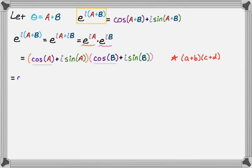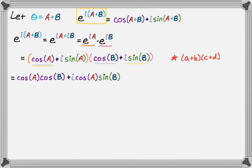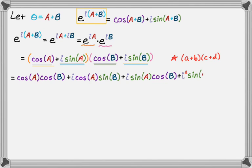Multiplying out like two binomials, taking it step by step: cosine a times cosine b gives cosine·a cosine·b. Cosine a times i sine b gives i cosine·a sine·b. Then i sine·a times cosine·b gives i sine·a cosine·b. Finally, i sine·a times i sine·b gives i squared sine·a sine·b. Since i squared equals negative one, that last term becomes minus sine·a sine·b, which is real.